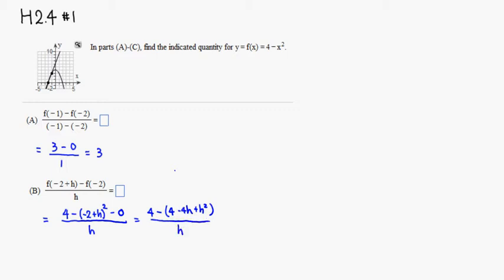Then we can cancel. You have 4 minus 4, so you can cancel those out. So then by distributing this negative sign to each term, we get positive 4h minus h squared over h.